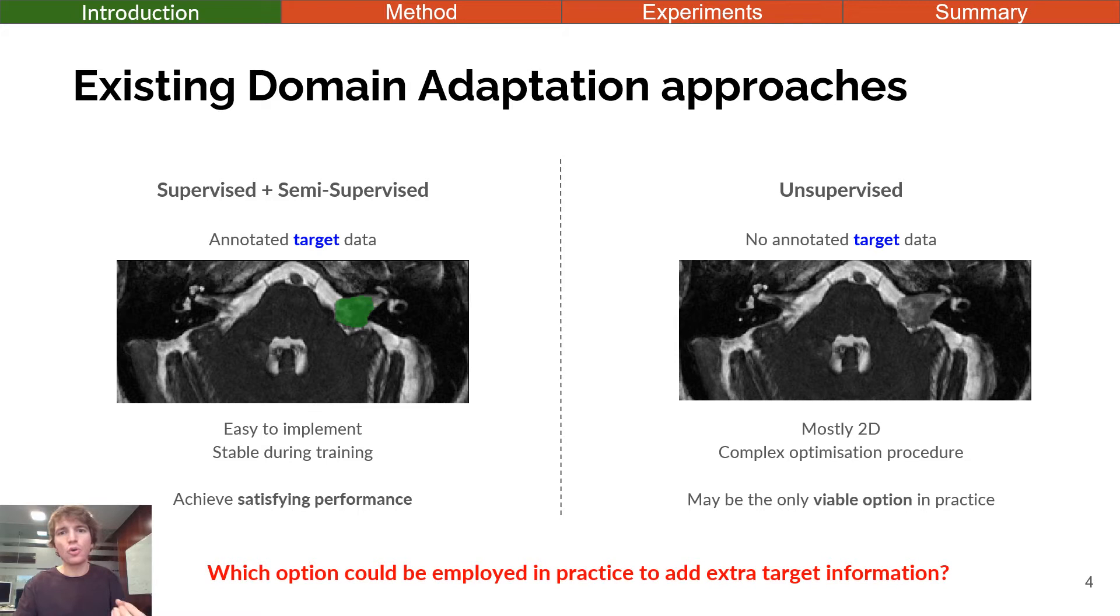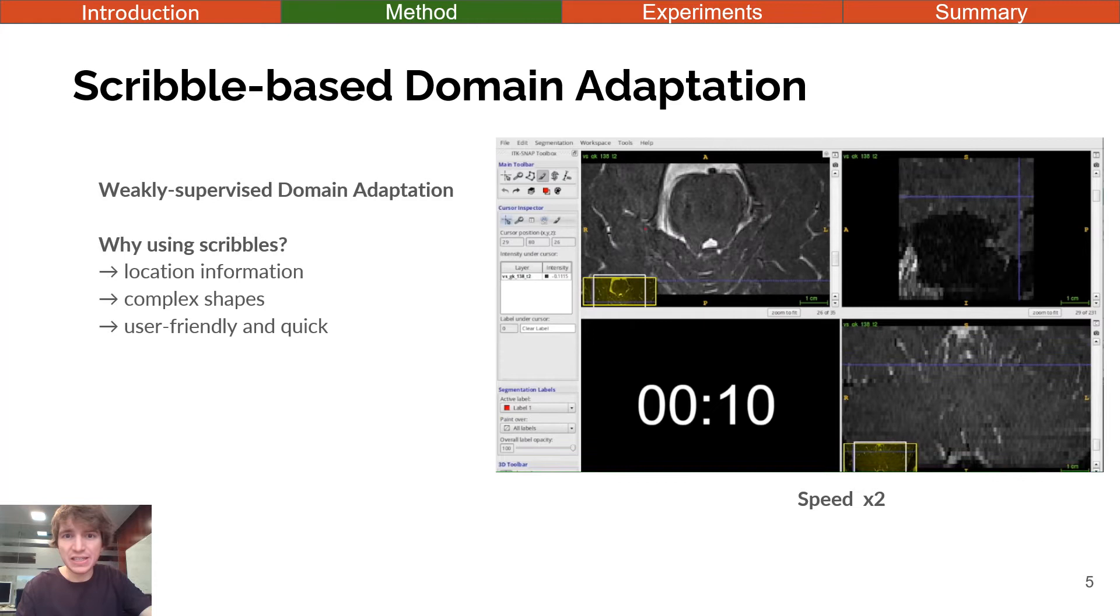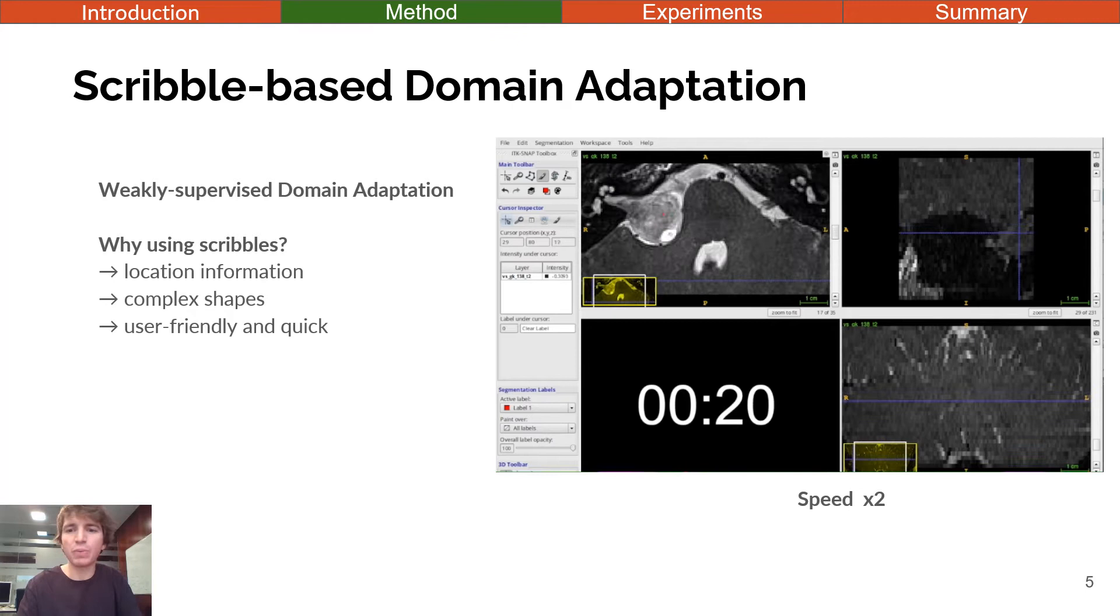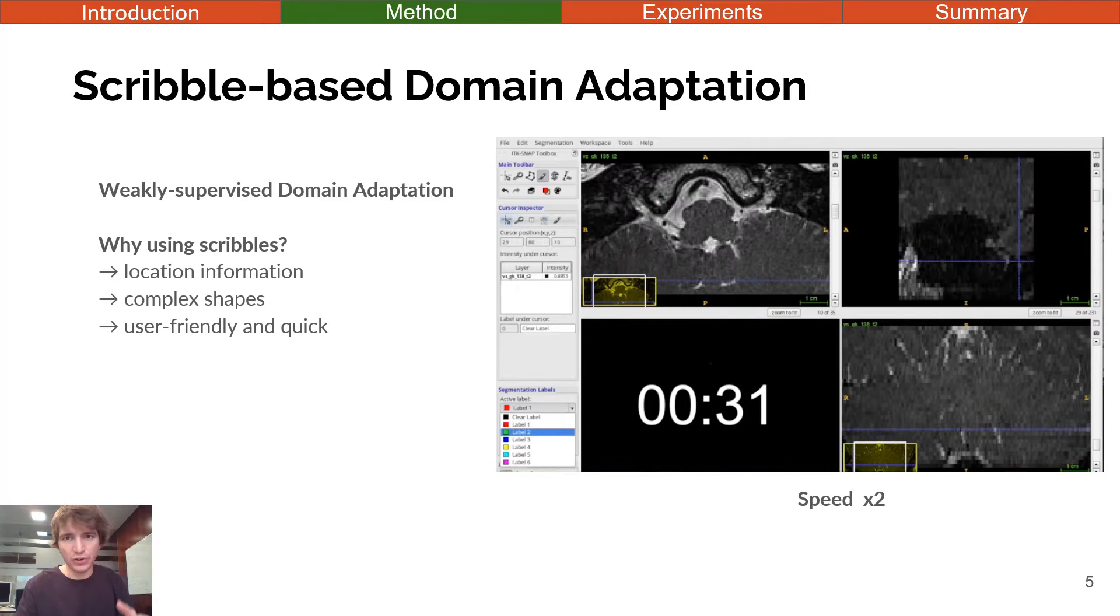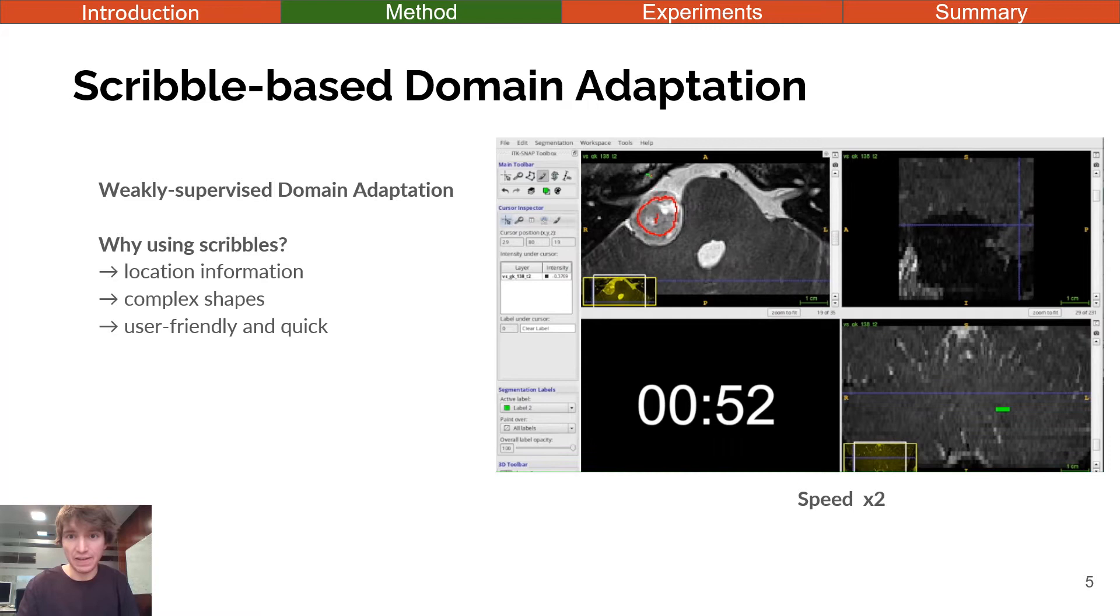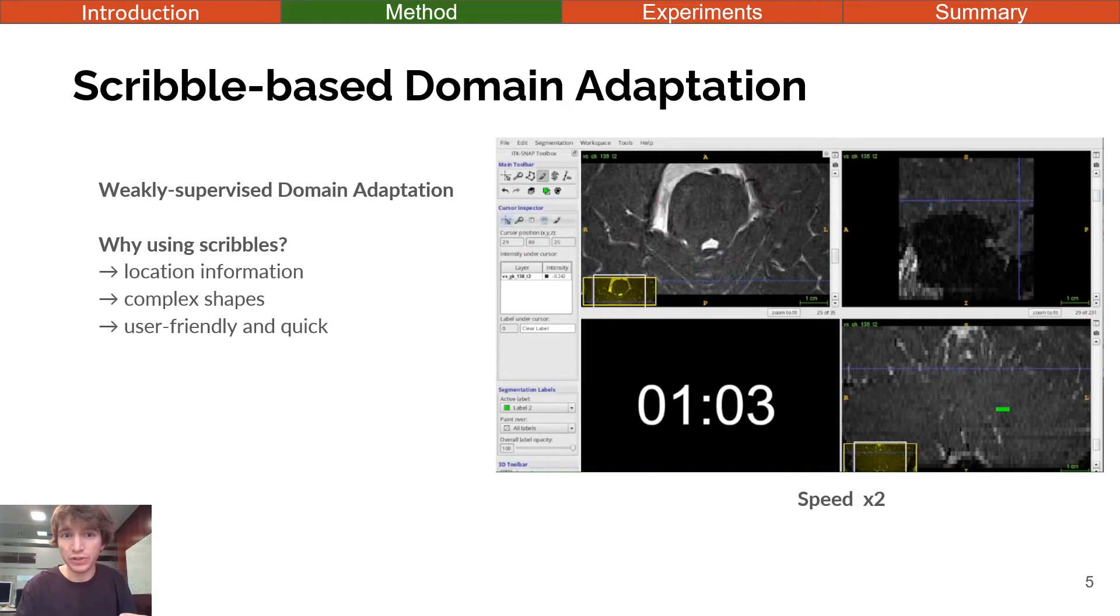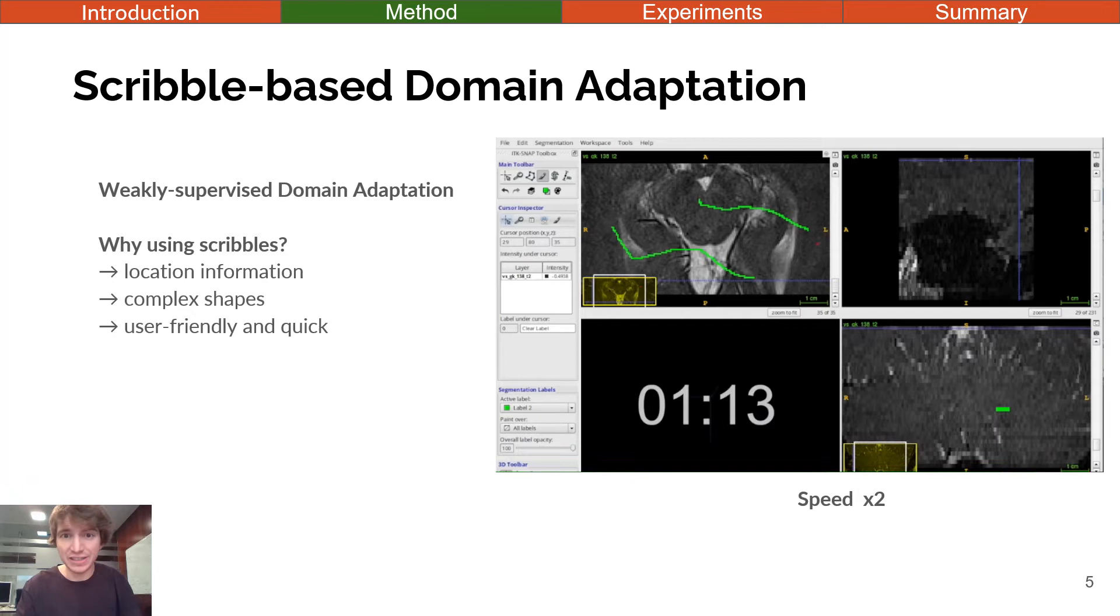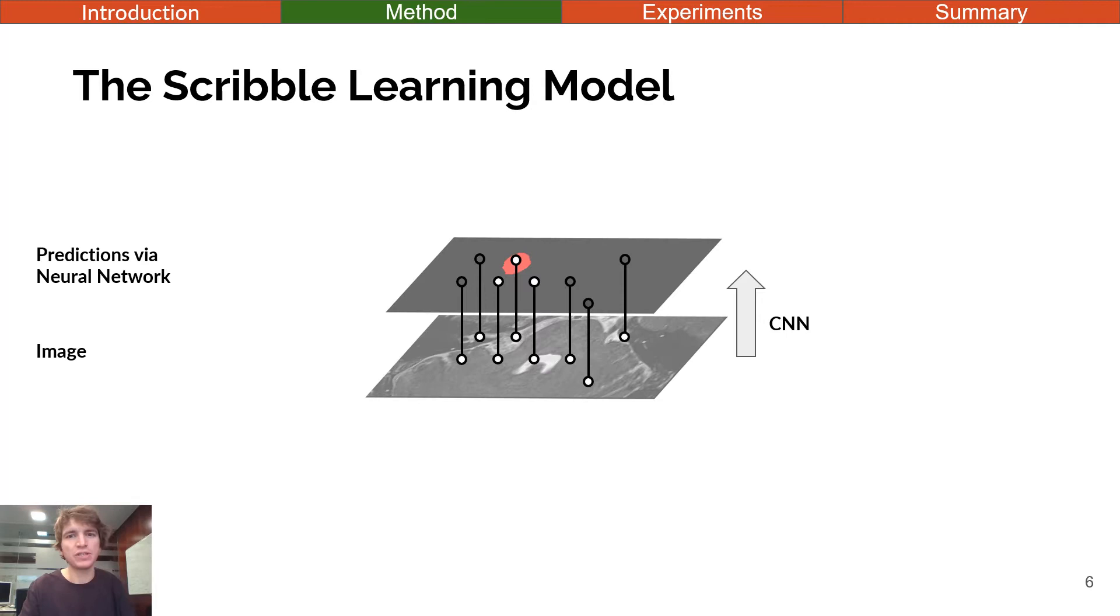So the question is, which option could we imagine to add some extra target information without requiring precise and time-consuming annotations? Our answer is weakly supervised learning. More precisely, we propose to use scribbles drawn on the target data, meaning some sparse annotations. Scribbles have many advantages. First, they provide precise location information without precise delineation. Moreover, they allow covering complex shapes. And finally, as you can see on this video, scribbles are particularly user-friendly and quick to draw. While it will take around 15 to 20 minutes to annotate this scan, it only takes a minute to draw the scribbles.